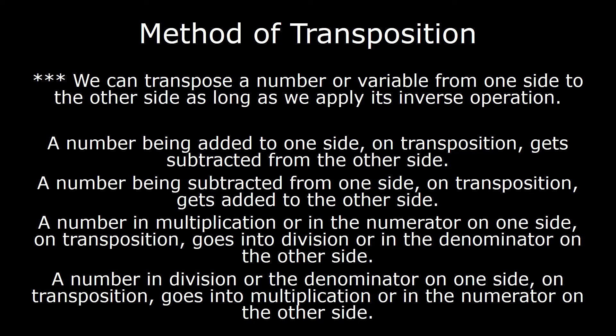If you were to forget that we applied the balancing method and disregard the middle step of our solution, what you'd see is: something being added on one side would subtract on the other; something being subtracted on one side would get added on the other; something multiplying on one side would divide the other; and something dividing one side would multiply the other. We can transpose a number or variable from one side to the other for the purpose of variable isolation.